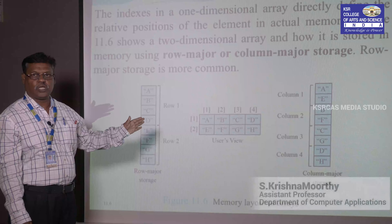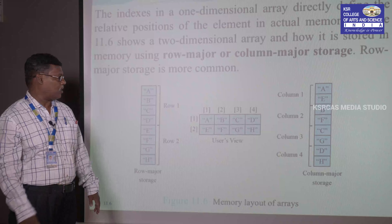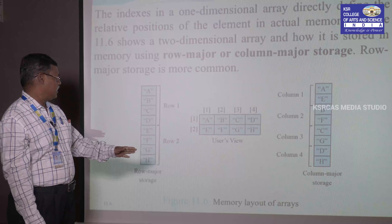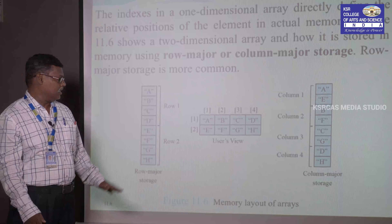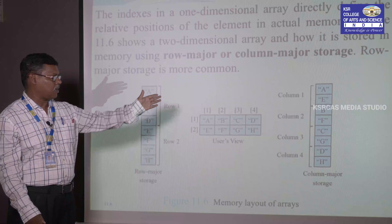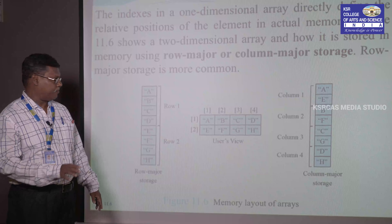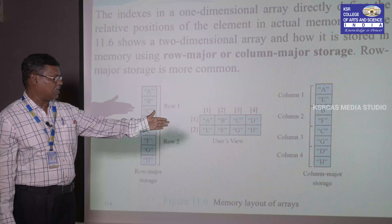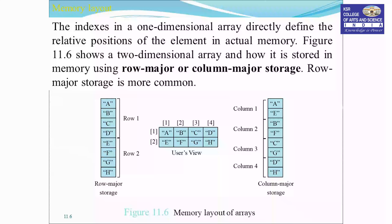A two-dimensional Array can be stored in memory with two major representations: row major order and column major order. For example, with a two-dimensional Array of two rows and two columns — in row major order, we store the first row (a, b, c, d) then the second row (e, f, g, h). In column major order, we store the first column (a, e), then (b, f), then (c, g), and finally (d, h).